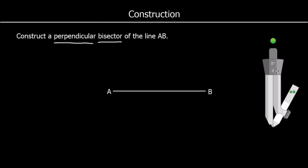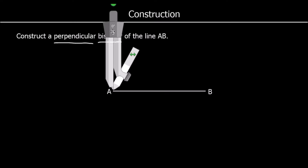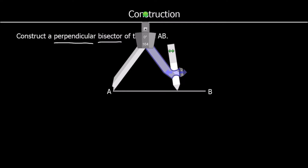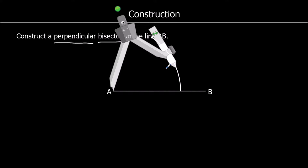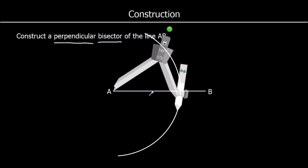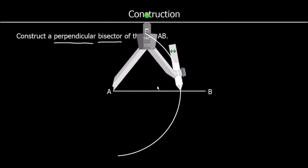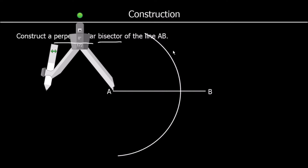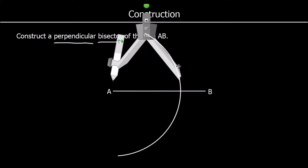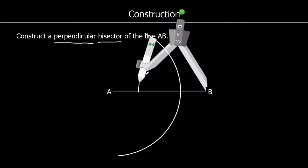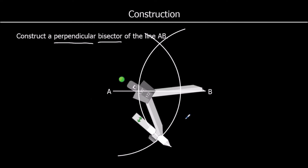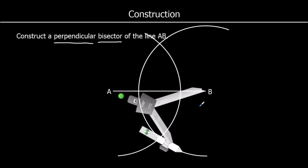So we're going to use our compass. I'm going to extend it and place the point at A, extending it beyond halfway. Now I'm going to draw part of a circle from A, and then switch it around, keeping the exact same distance — the exact same length — and draw part of a circle from B as well.